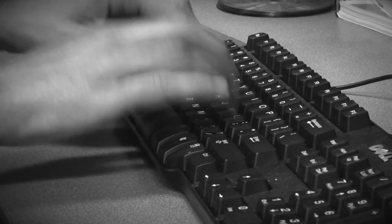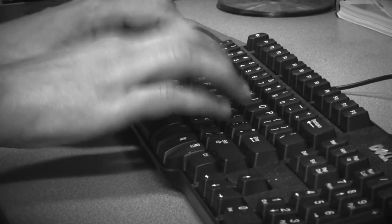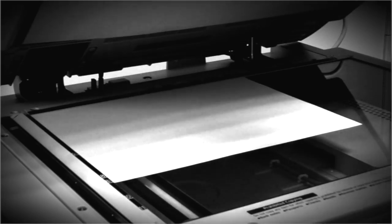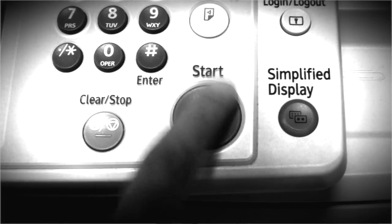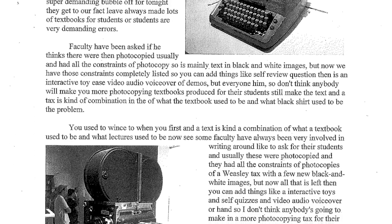An e-text is kind of a combination of what the textbook used to be and what lecture used to be. Faculty have in the past written things that were then photocopied, and it had all the constraints of photocopy, so it was mainly text and black and white images.